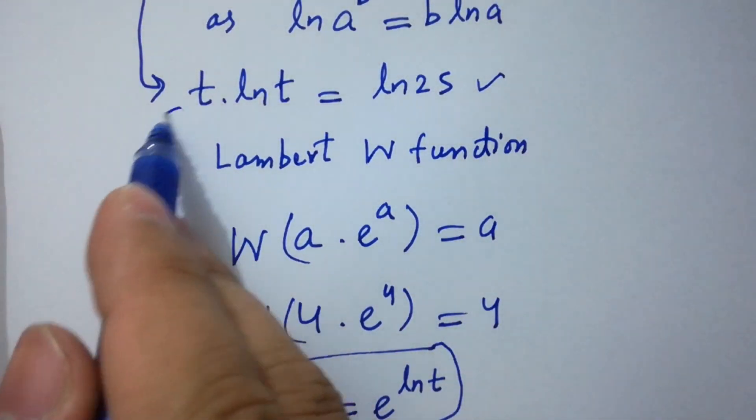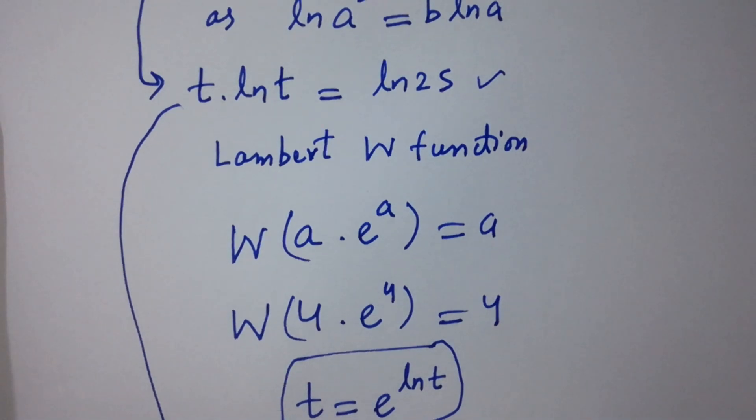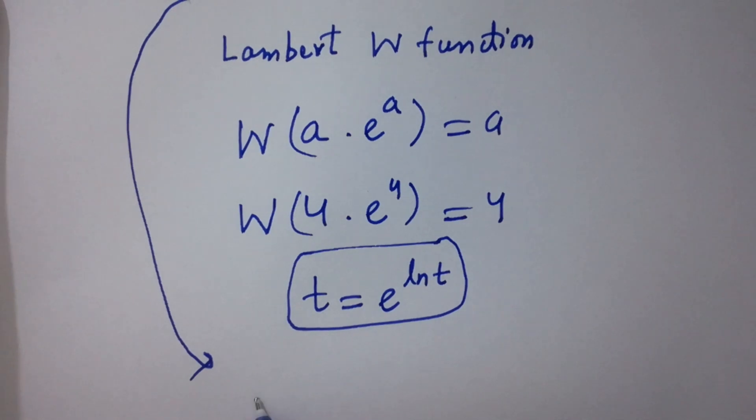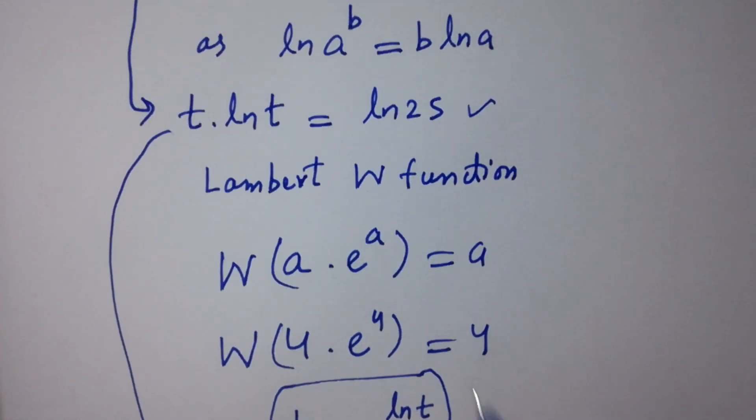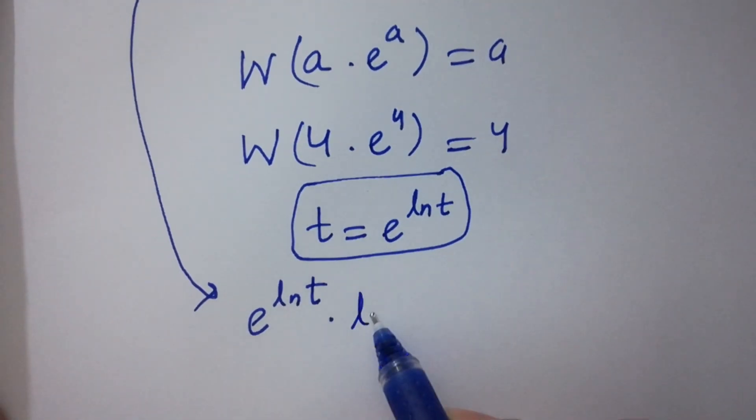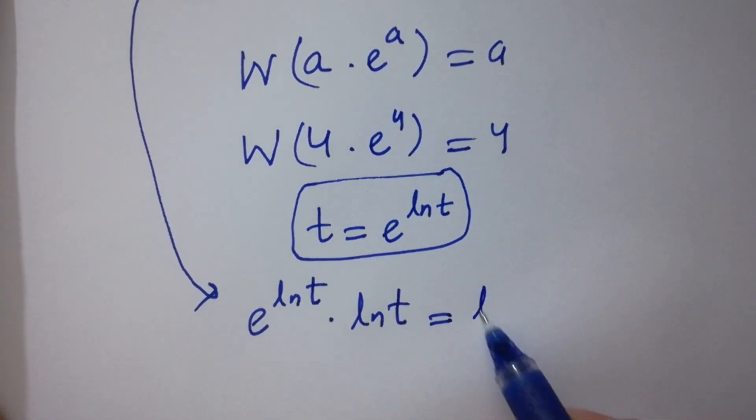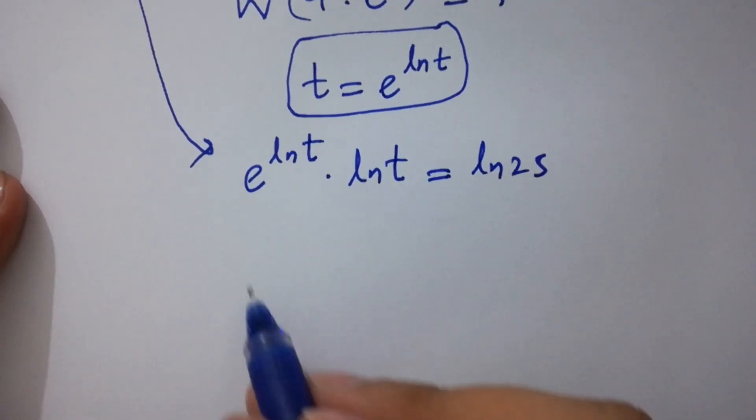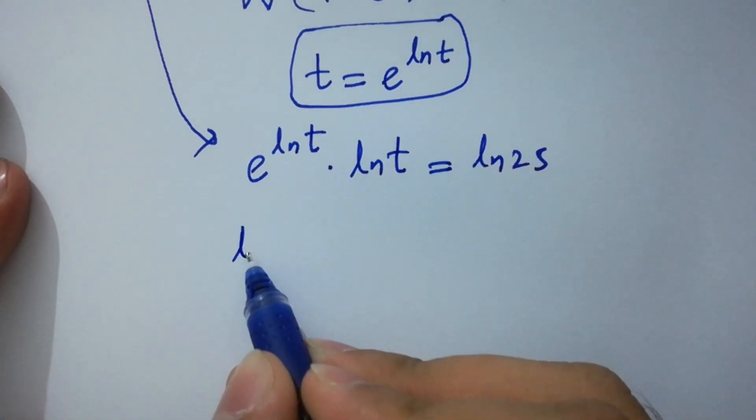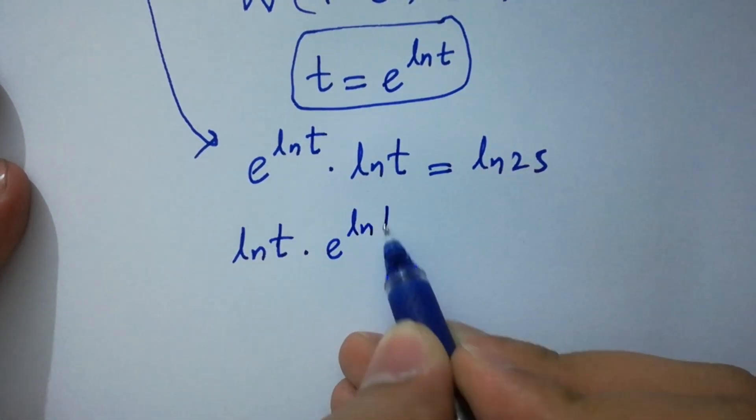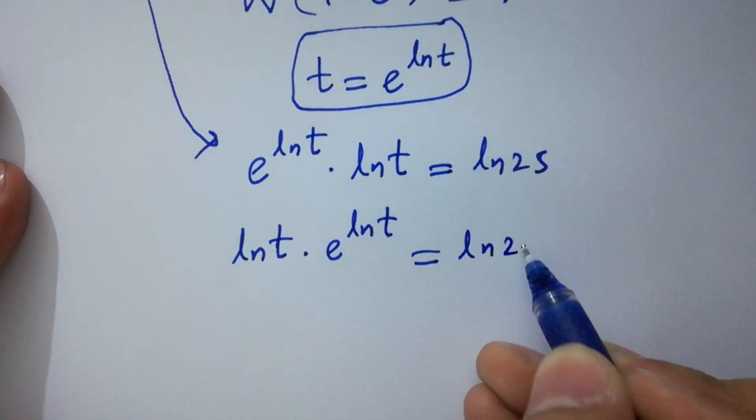So we can write it as t ln t equals ln 25 will be here e to the power ln t times ln t, as it is equal to ln 25. It can be written as ln t times e to the power ln t equals ln 25.